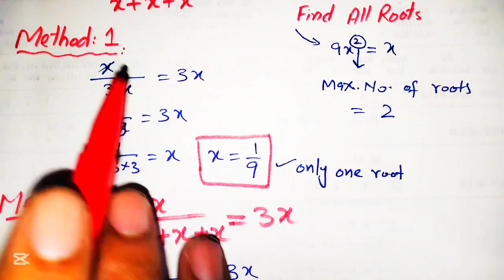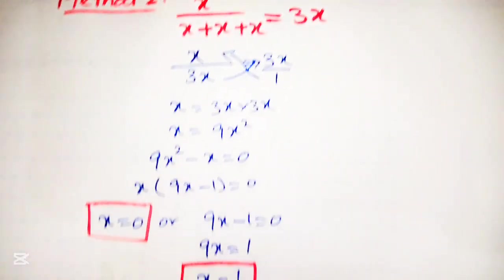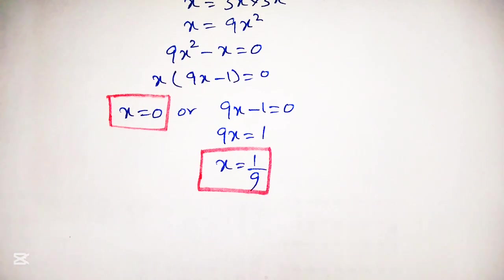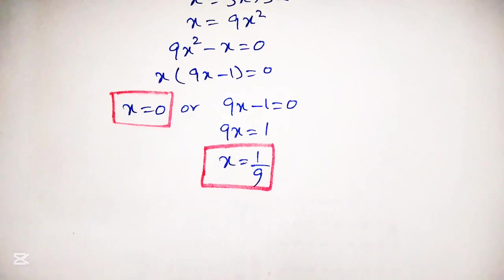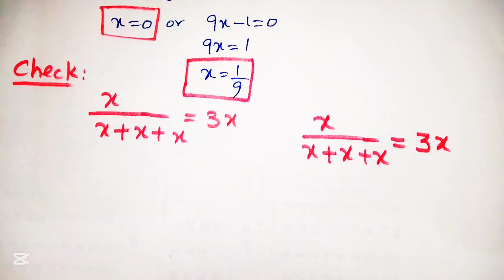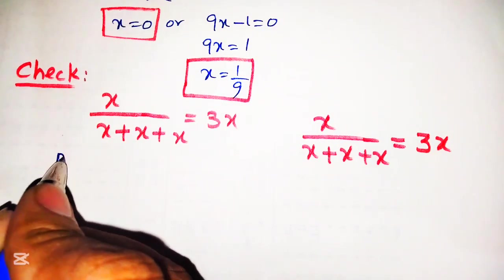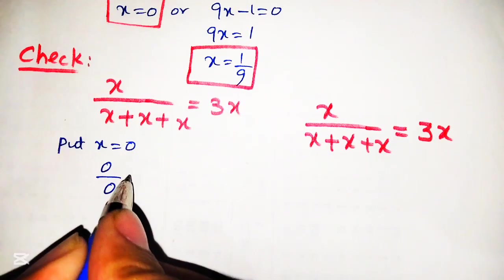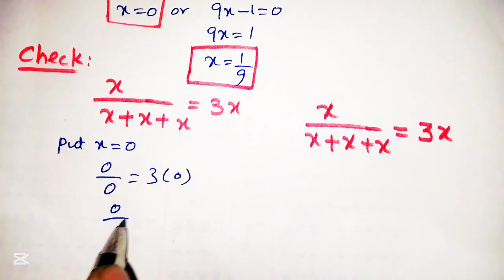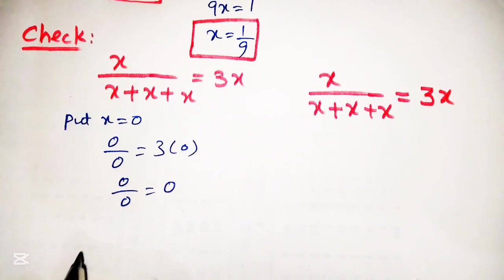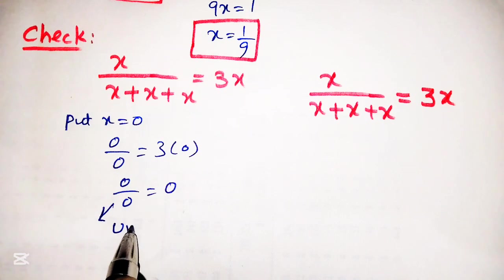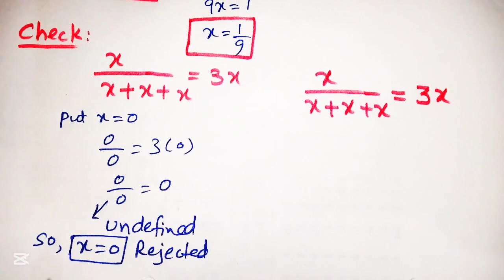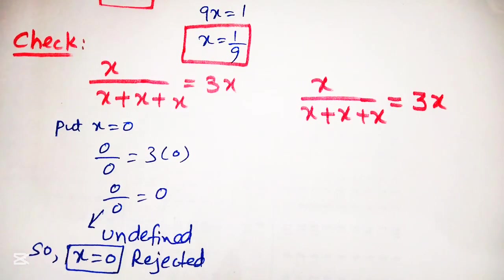Now we will verify these roots and check their validity. We will write the given equation again. We put x equal to 0 and get 0 over 0 is equal to 3 into 0, that is 0 over 0 is equal to 0. Here, 0 over 0 is undefined. This factor is undefined, so x equal to 0 is rejected as it gives an undefined value.